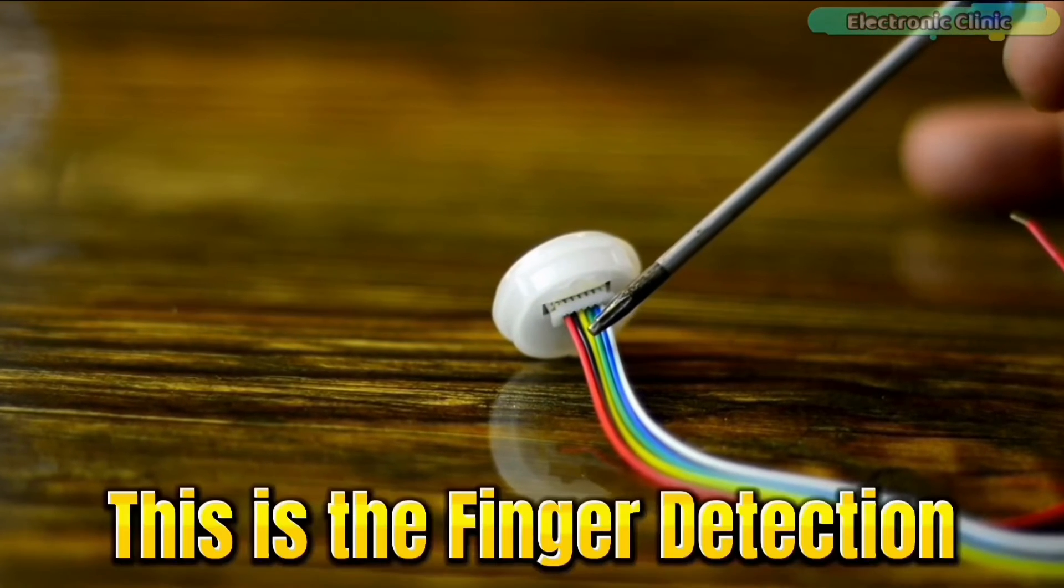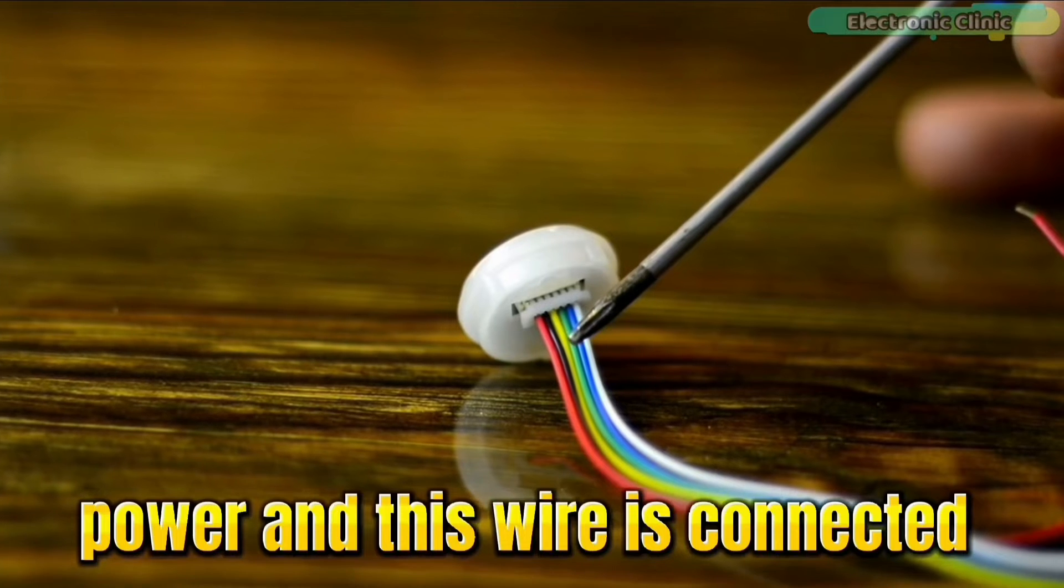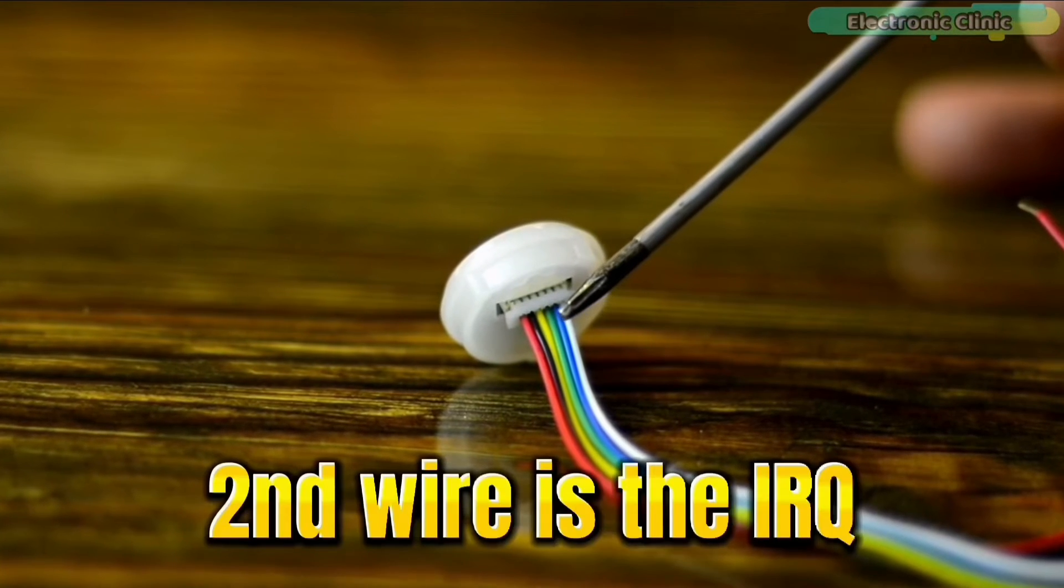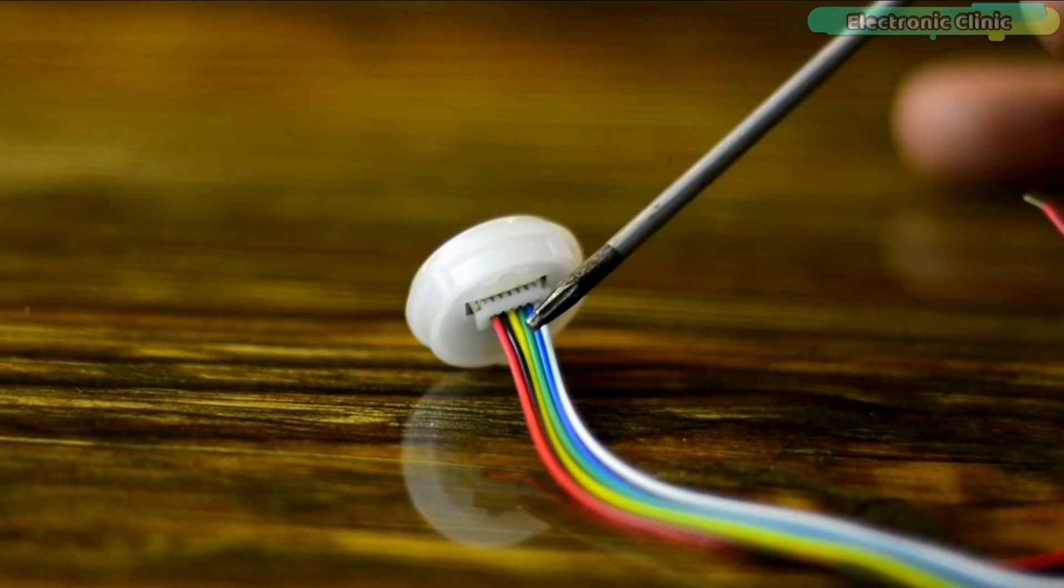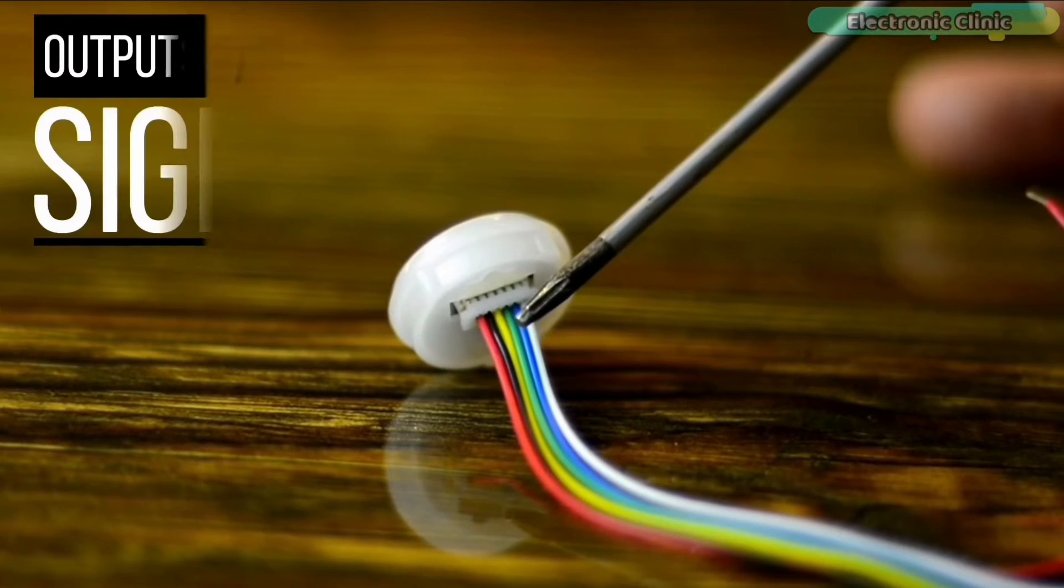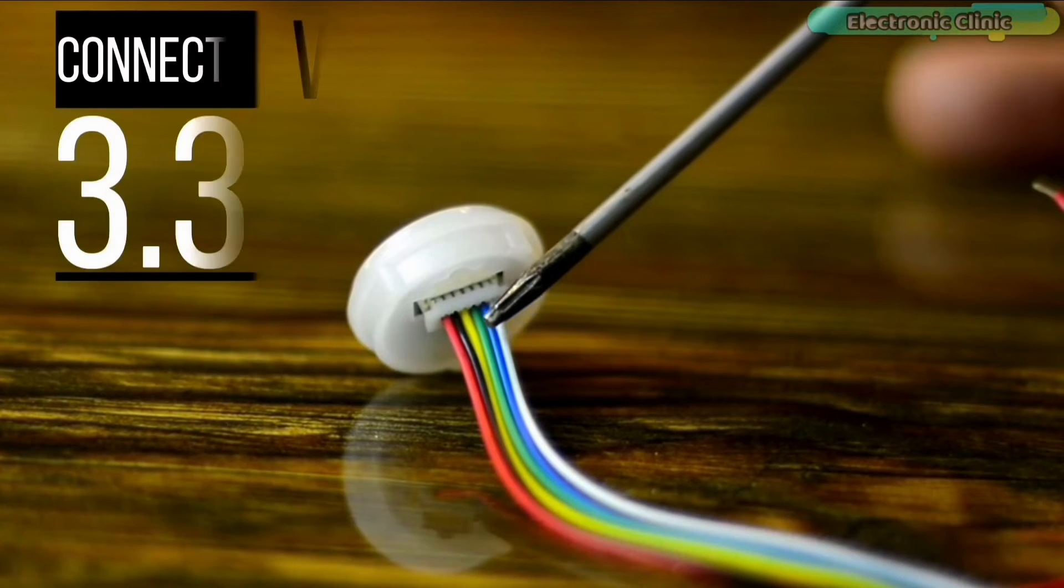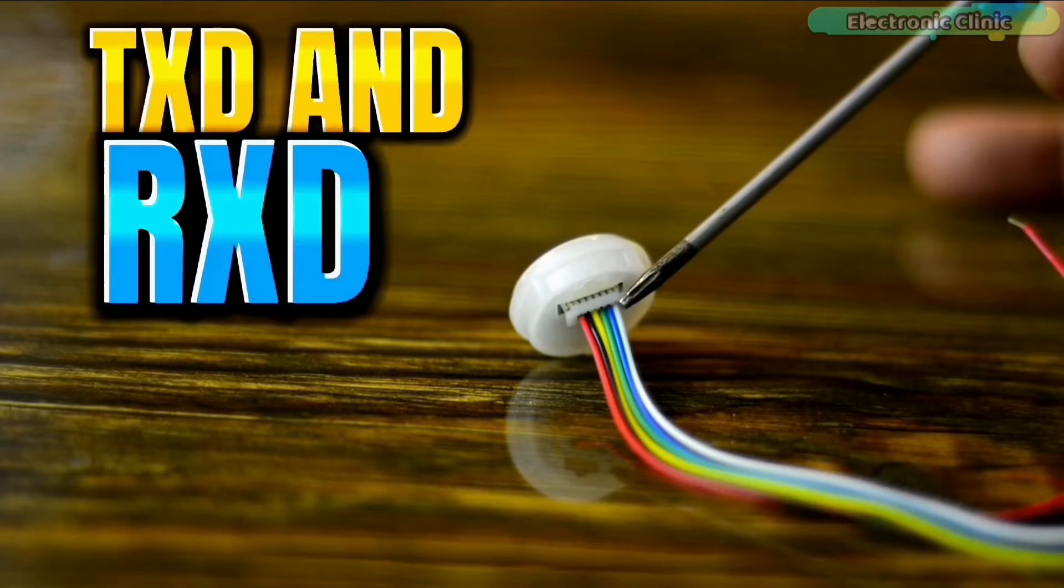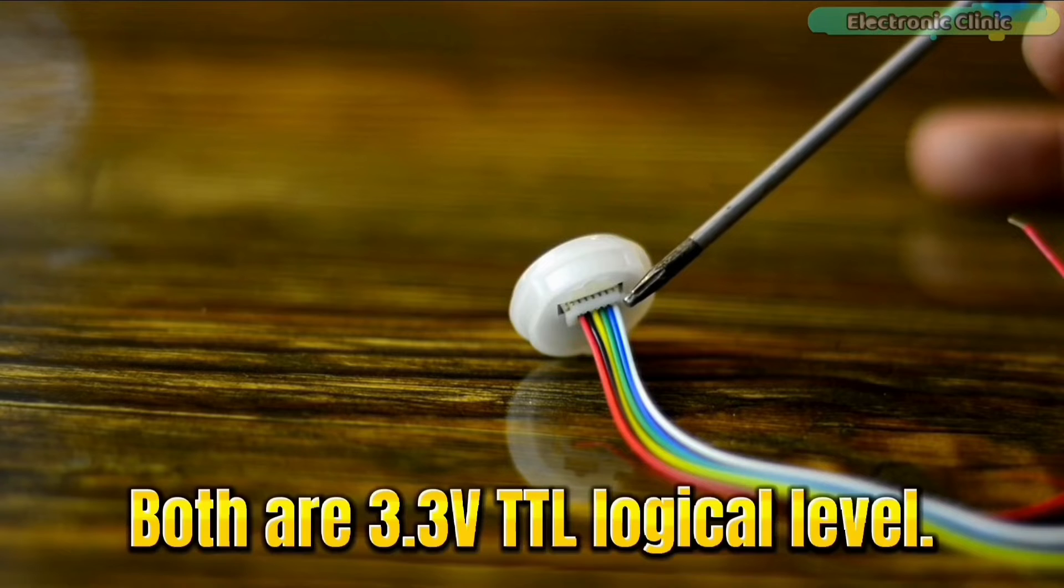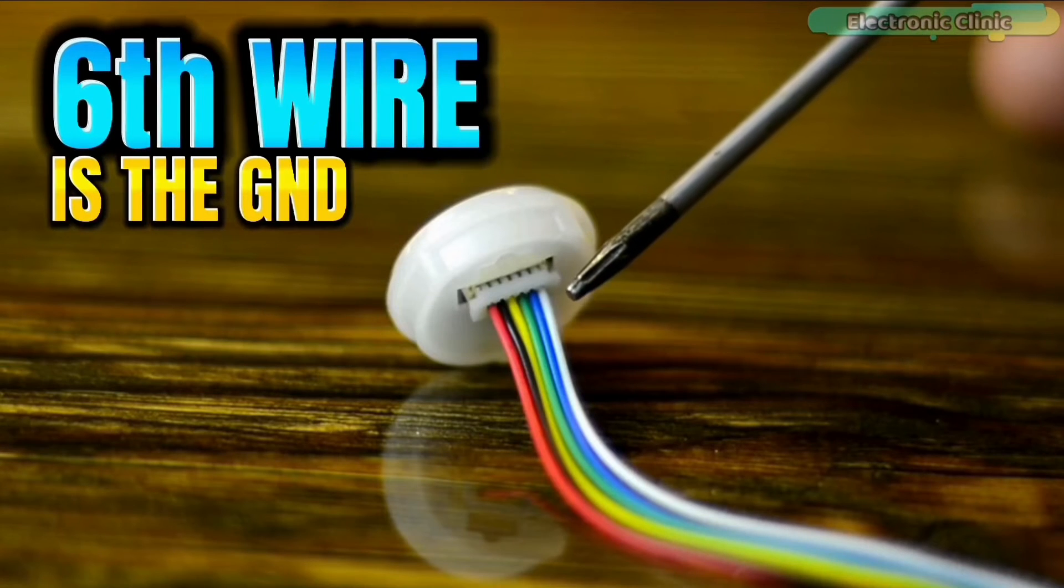First wire is the VD. This is the finger detection power and this wire is connected with 3.3 volts. Second wire is the IRQ. This is the finger detection signal wire. When there is a finger, it outputs a high signal. Third wire is the VCC and it should be connected with 3.3 volts. Fourth and fifth wires are TXD and RXD. Both are 3.3 volt TTL logic level. And sixth wire is the ground and it should be connected with the ground.